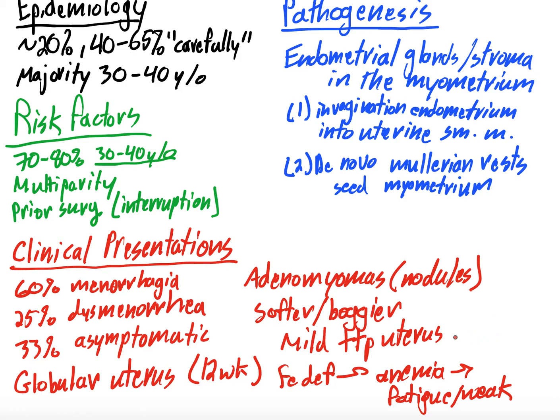So primarily, these patients present with heavy periods. Some will have pain with periods. Some will be asymptomatic. On physical exam, you might feel nodules or a globular uterus that's softer, boggier, or mildly tender. Patients may also have systemic symptoms of anemia.